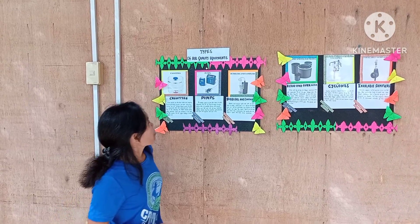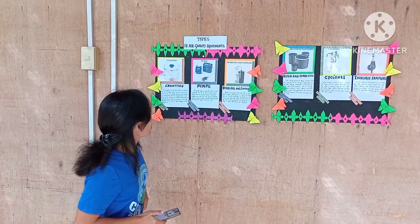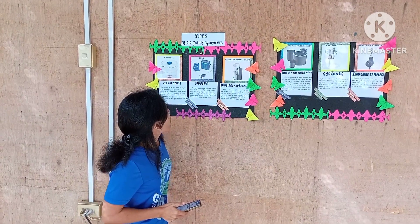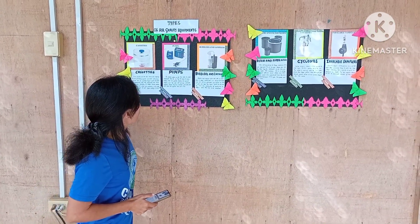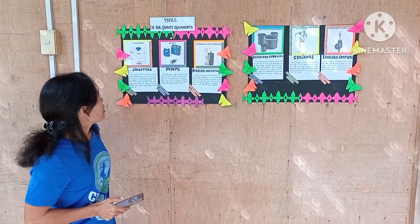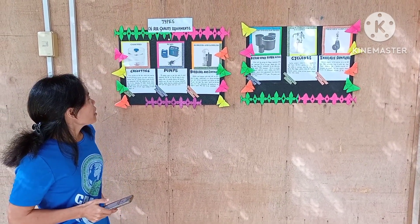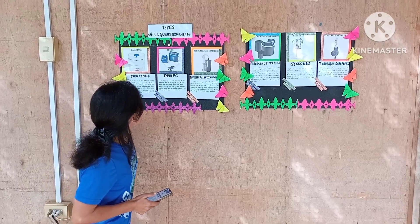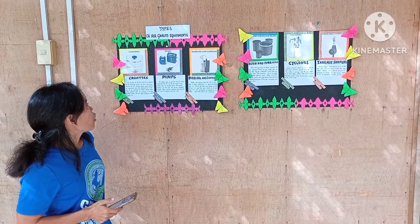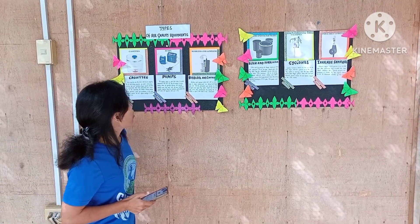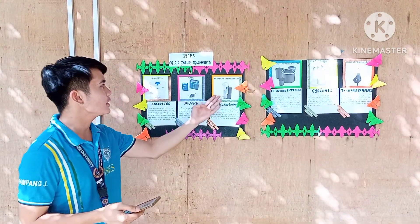Next are pumps. Air sampling pumps use filter media to collect contaminants from the air. They are useful for area sampling, indoor air quality sampling, and personal sampling. They work well for many contaminants including beryllium, asbestos, particulates, mold spores, respirable dust, and silica.